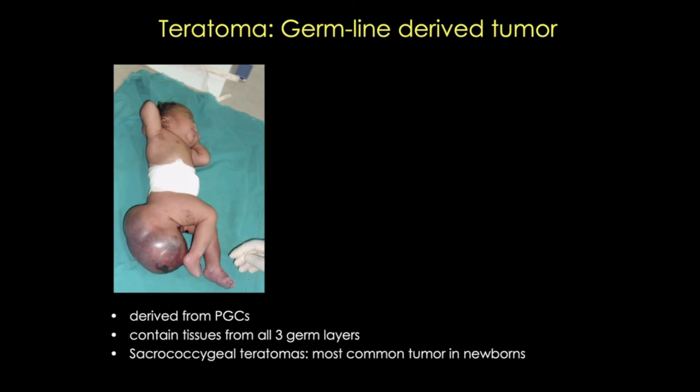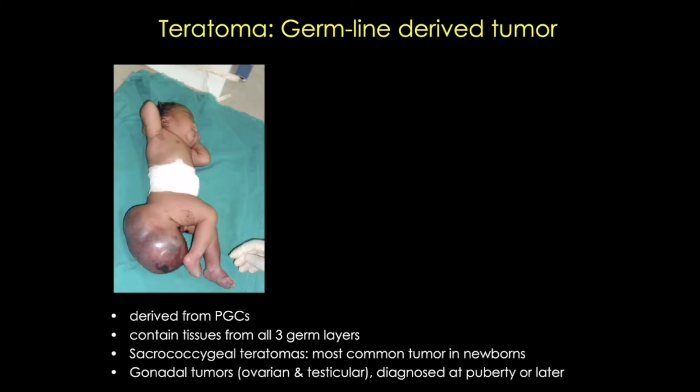One example is the sacrococcygeal teratoma. This tumor is a midline tumor and is the most common tumor in neonates. In fact, these types of tumors account for 3% of all childhood malignancies. Gonadal teratomas, on the other hand, are usually diagnosed after puberty.